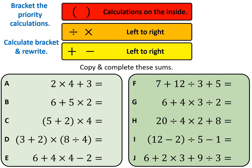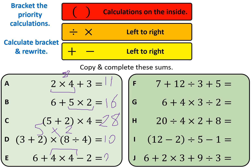Pause the video, try the questions, then come back and press play to check your answers. For part A: 2 times 4 first is 8, then 8 plus 3 is 11. Part B: 5 times 2 first is 10, then 6 plus 10 is 16. Part C: brackets first, so 5 plus 2 is 7, then 7 times 4 is 28. Part D: what's inside the bracket first — 3 plus 2 is 5, then 5 times 2 (since 8 divided by 4 is 2) gives 10. Part E: 4 times 4 first is 16, then 6 plus 16 is 22, subtract 2 is 20.